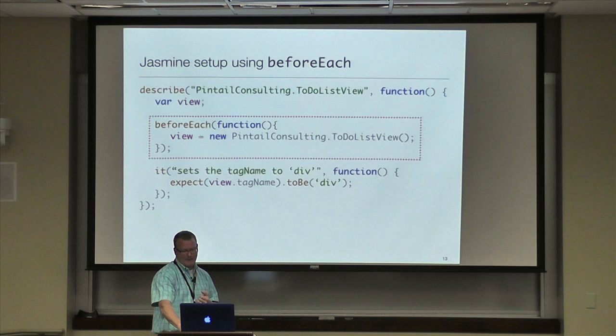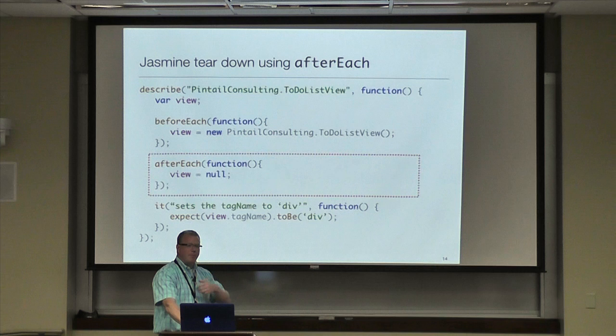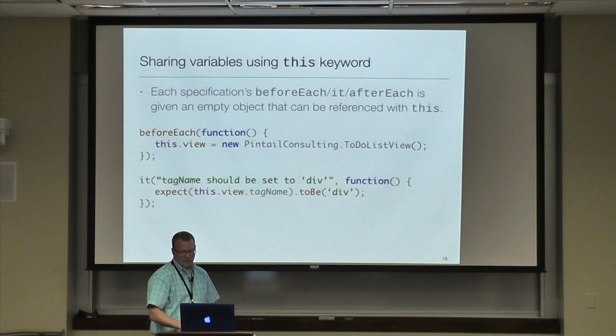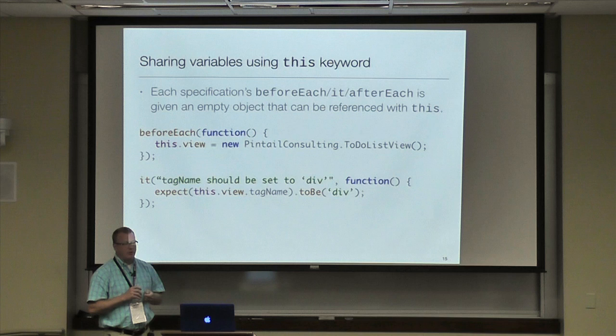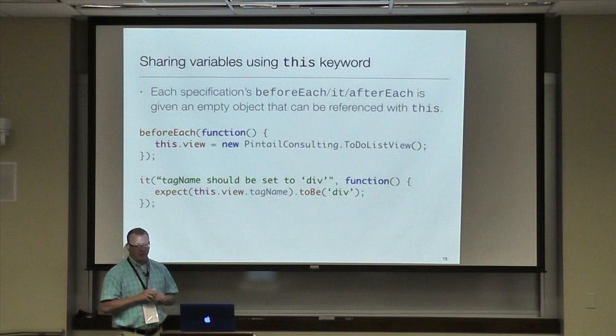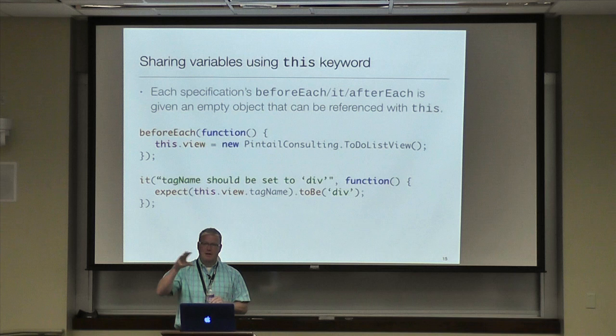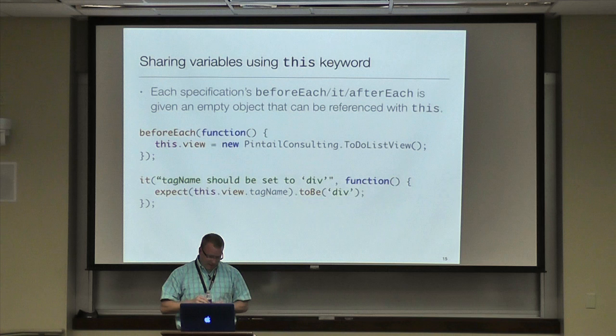There's also `afterEach`, which works the same way but tears down your fixtures. One feature Jasmine allows is you can share state between the `beforeEach`, the `it`, and the `afterEach` using the `this` reference. Each cycle gets a new empty object that is referenced through `this`, which makes cleaning up and building a testing context nice.